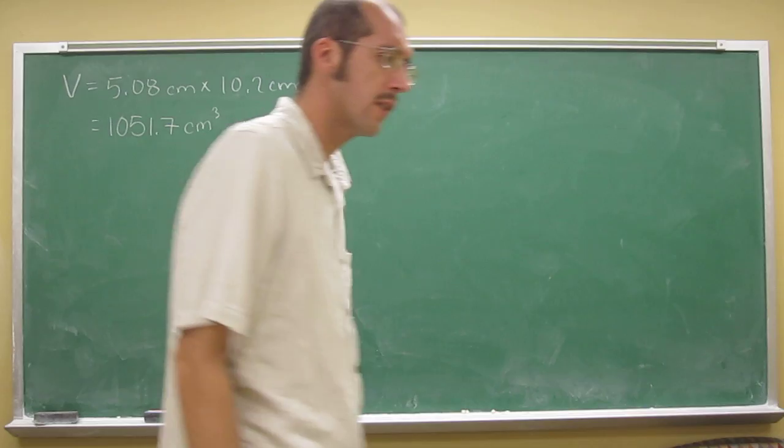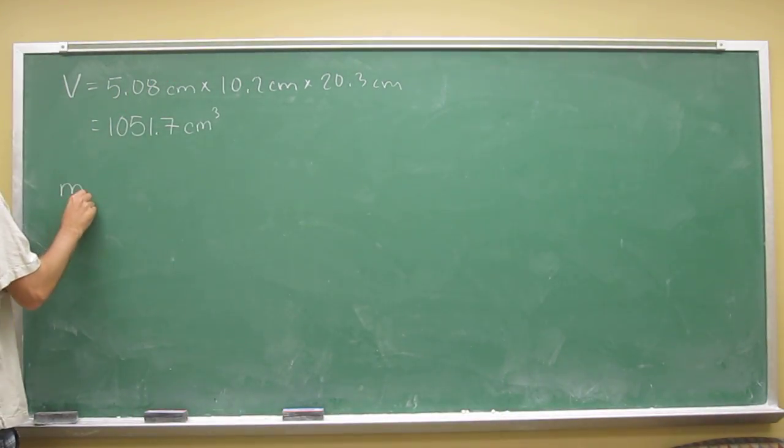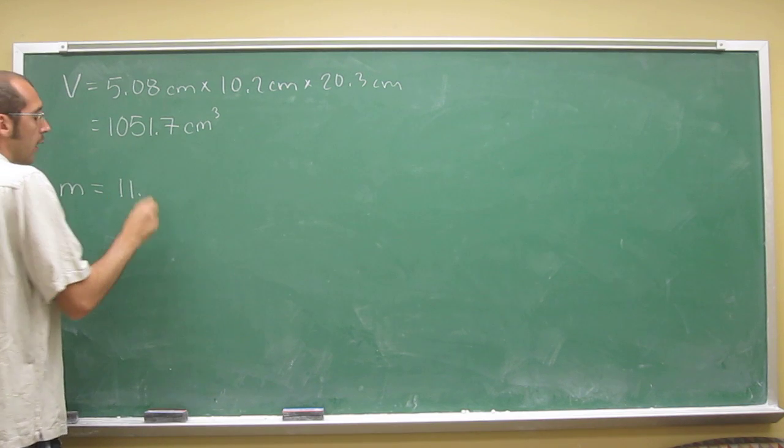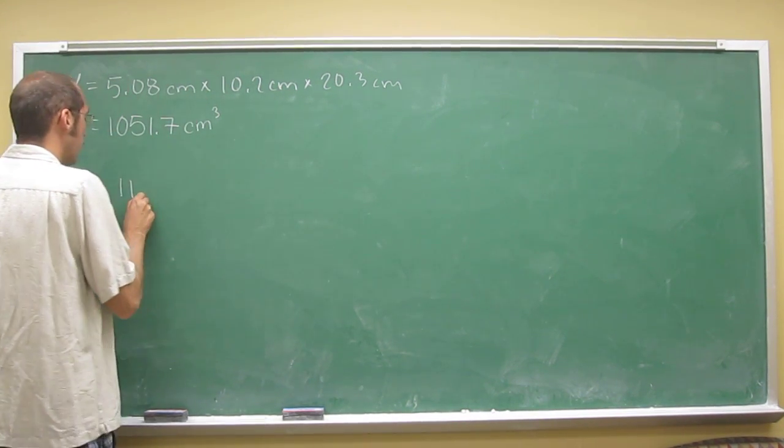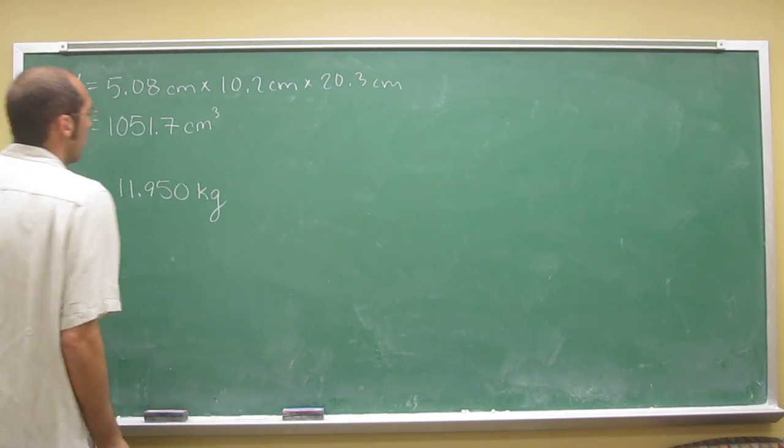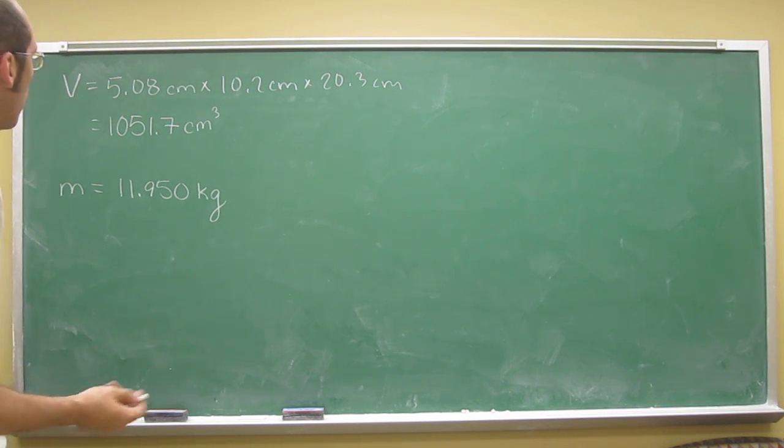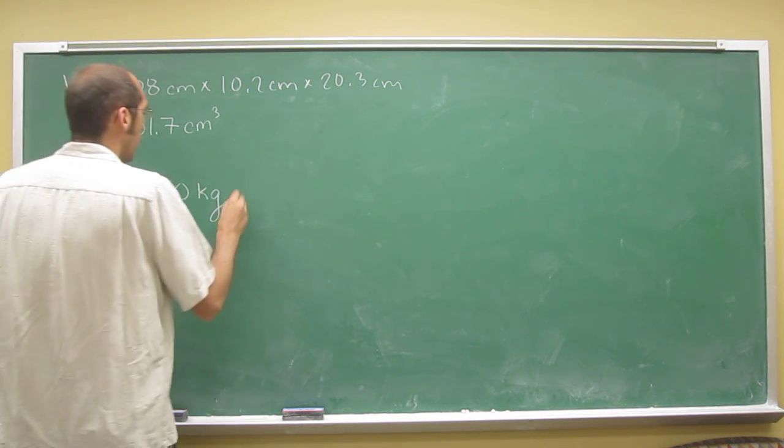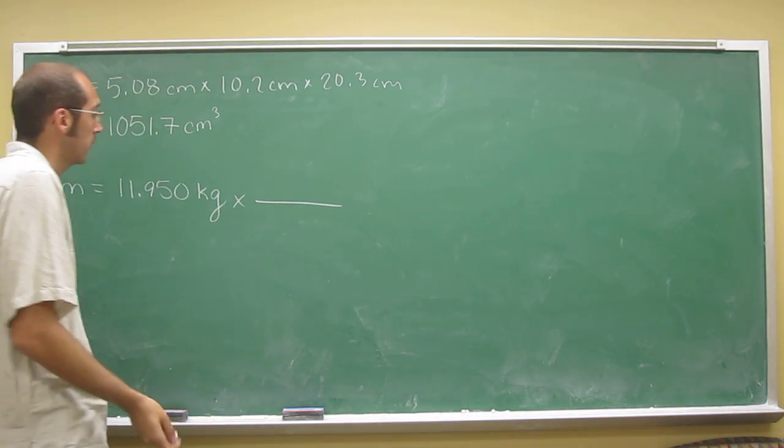It also gave us the mass of this object, this brick. It's 11.950 kilograms. So that's not grams. Remember, we want the density in grams per cubic centimeter, but we do know the conversion. That's a conversion you're supposed to memorize.